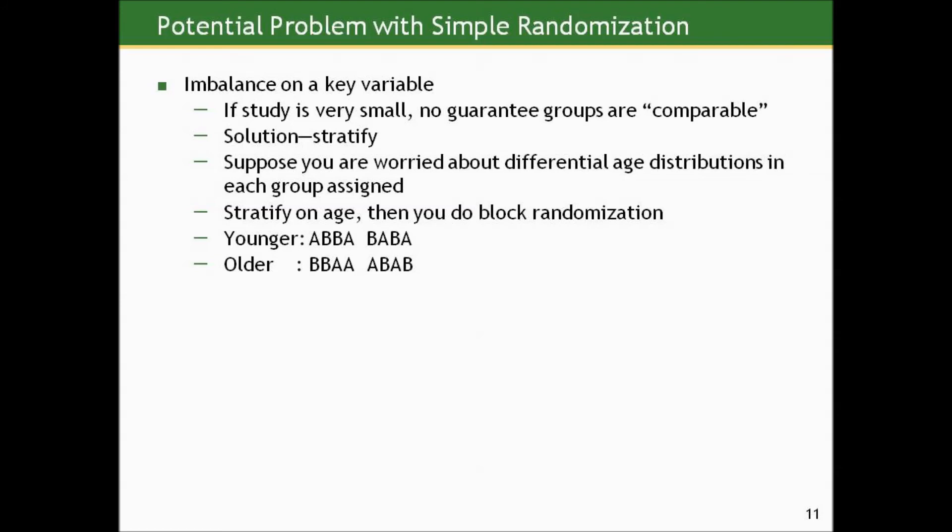Another potential problem with simple randomization in small sample sizes is if your study is very small, there's no guarantee that your groups are necessarily comparable on some other factor, like the sex distribution or the age distribution. So you can actually do another level of complexity of your randomization schema to make sure your small groups are balanced in terms of the number that go into A and B and that A and B are balanced with respect to some key variable that you're afraid may be related to the outcome of interest as well. So suppose you were worried, for example, about differential age distributions in each of the two groups aside.